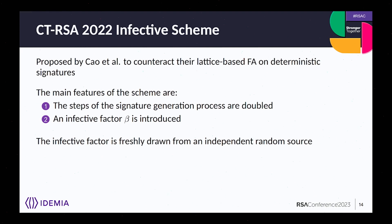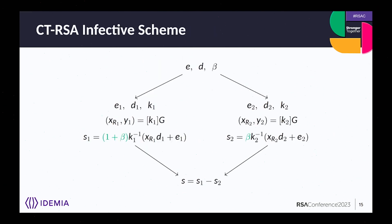For the CTRSA 2022 countermeasure, the scheme is simpler: all processes are doubled and an infective factor β, freshly drawn at random, is introduced. Two partial signatures S₁ and S₂ are computed — the same except that S₁ uses an infective factor of (1 + β) and S₂ uses β. At the end, subtracting S₂ from S₁ recovers the genuine signature S.